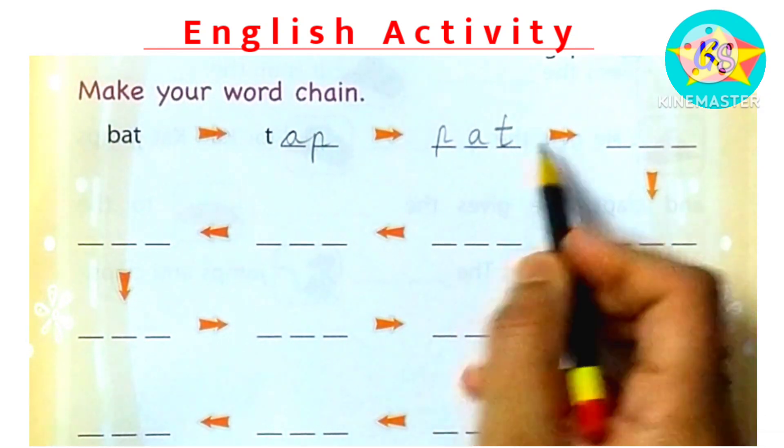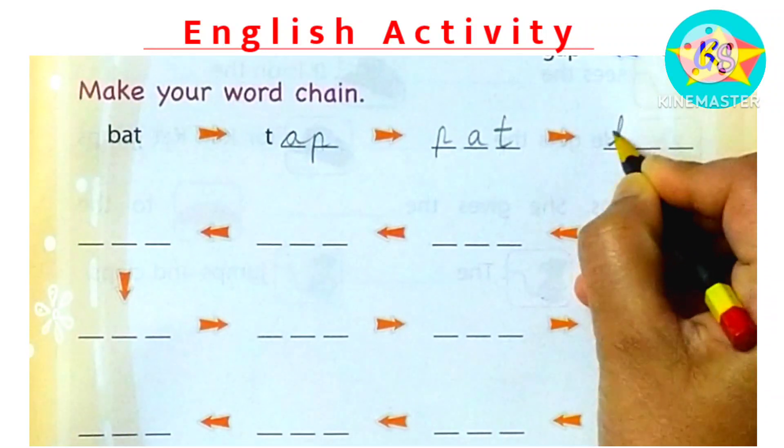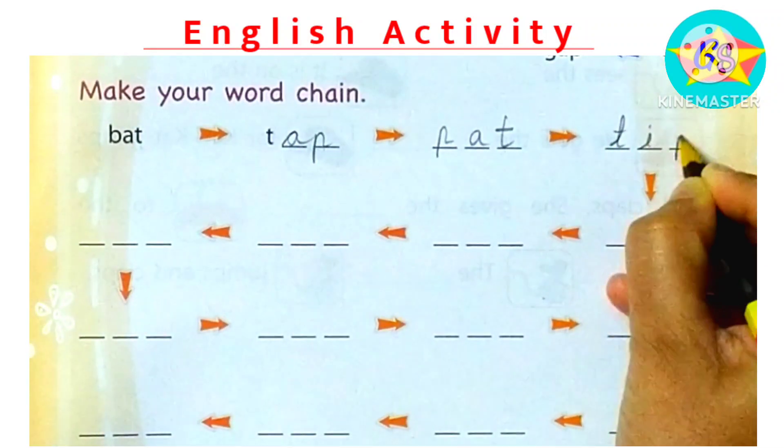This is the ending T, so we have to think from T. Next, we can write T-I-P, TIP. Now the ending is P.